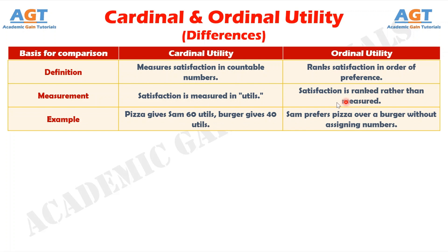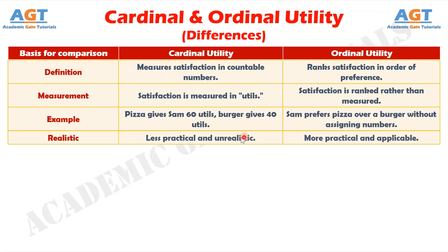Number 3: cardinal utility assumes that a person can quantify how much more they prefer one good over another, whereas ordinal utility only considers the relative ranking of preferences. Number 4: cardinal utility is less practical because measuring satisfaction numerically is unrealistic, whereas ordinal utility is more practical and applicable in real-world scenarios.